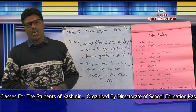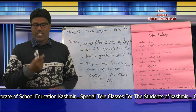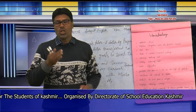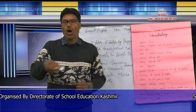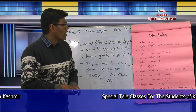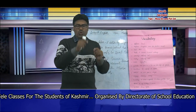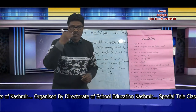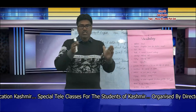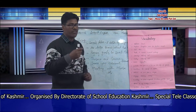On this vocabulary chart, the first word is 'native.' It is pronounced as 'native.' Native means local — the resident of a particular area. For example, in our lesson, Musa Ali was a native boy of Nubra, meaning he is the local boy of Nubra Valley.